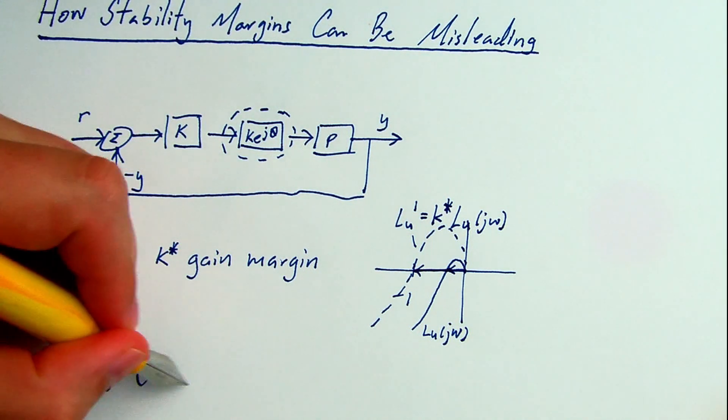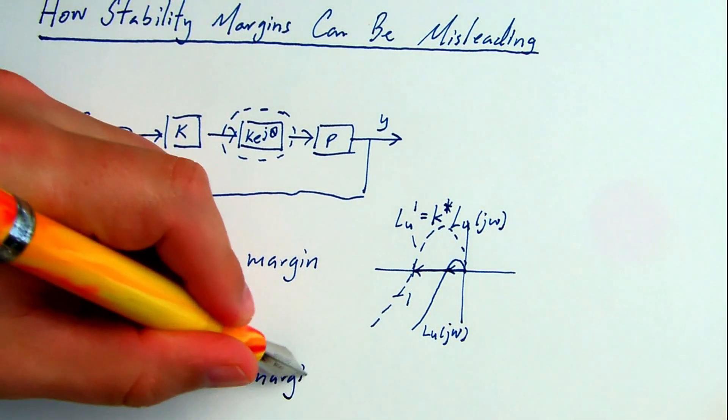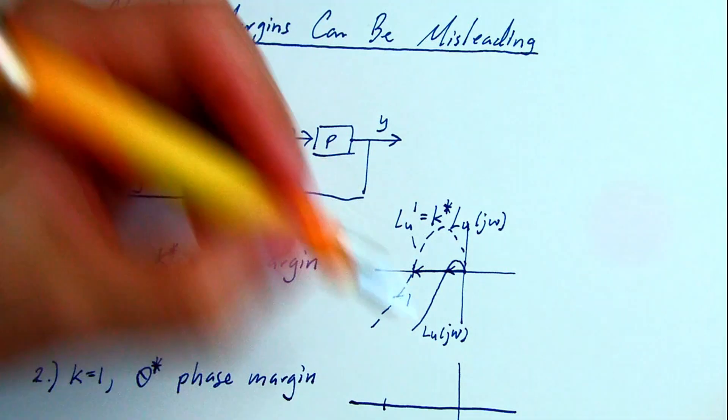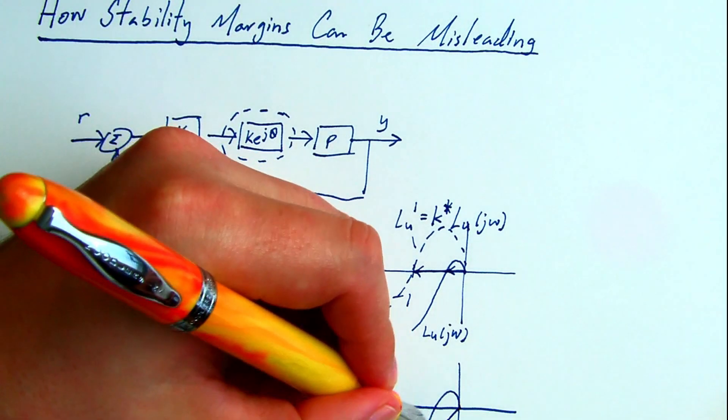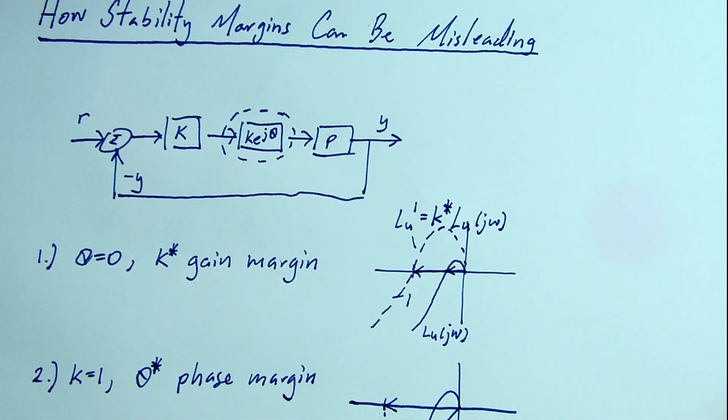In the second case, we looked at theta star, that is rotating the loop gain about the origin by a certain amount, so that the phasor that's on the unit disk is rotated to the critical point at minus one.